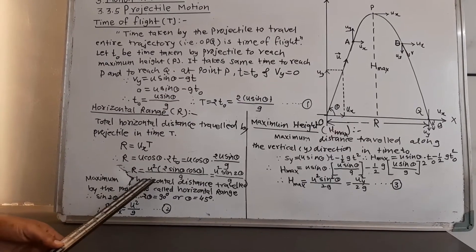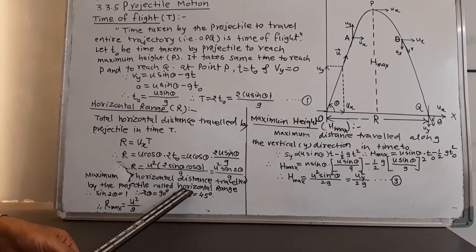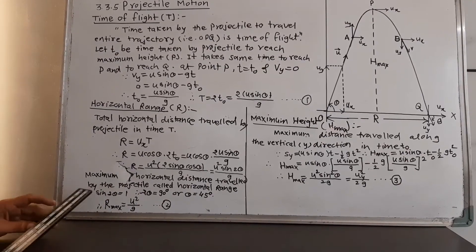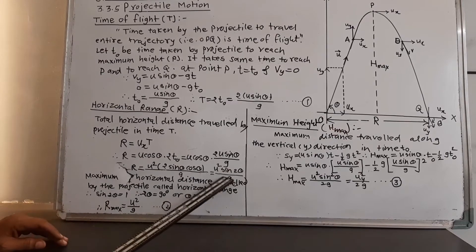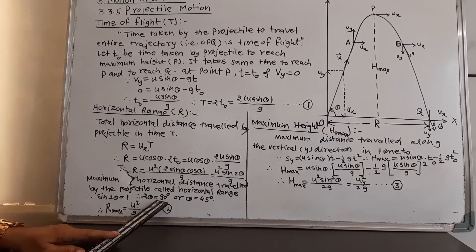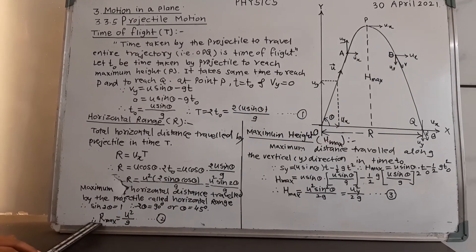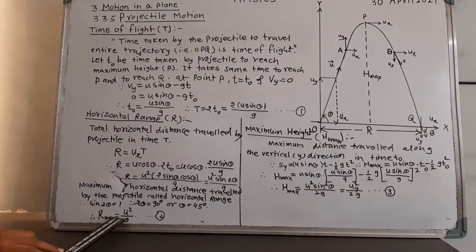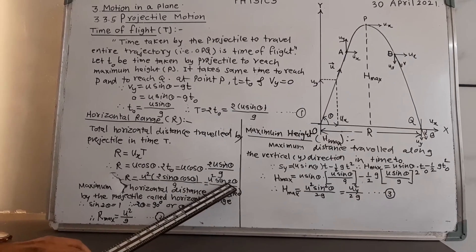The maximum horizontal distance travelled by the projectile is called horizontal range and it will be maximum when sin 2 theta is 1 in this equation and therefore, 2 theta will be 90 degree, that means theta equal to 45 degree. Therefore, the maximum range of the projectile R max will be U square upon G from this equation because sin 2 theta is 1.